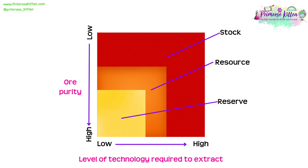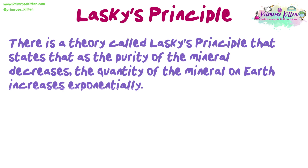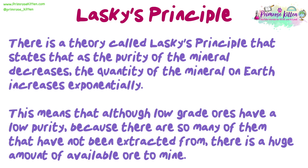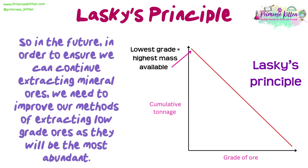Something else we can determine from the graph is that a lot of the stock is made up of the lowest purity deposits. As we continue to extract from the high purity deposits, they will become depleted, meaning we will soon rely on the lower grade ores. There is a theory called Lasky's Principle that states that as the purity of the mineral decreases, the quantity of the mineral on Earth increases exponentially. This means that although low grade ores have a low purity, because there are so many of them that have not been extracted from, there is a huge amount of available ore to mine. So in the future, in order to ensure we can continue extracting mineral ores, we need to improve our methods of extracting low grade ores as they will be the most abundant.